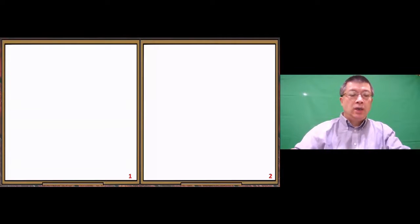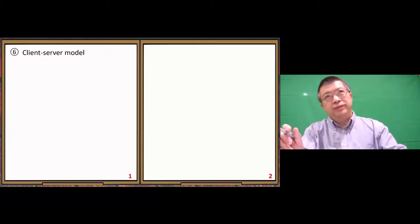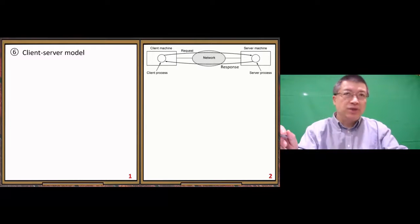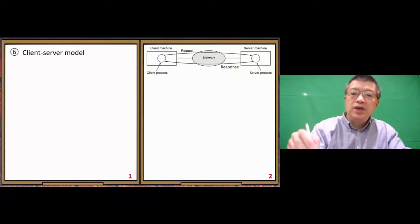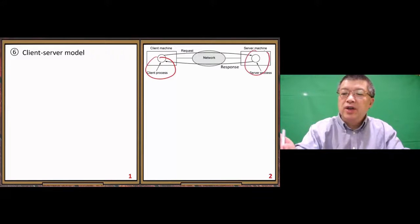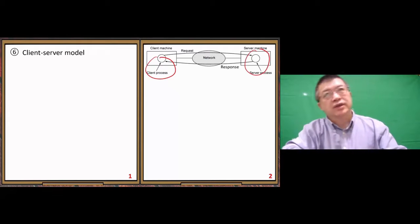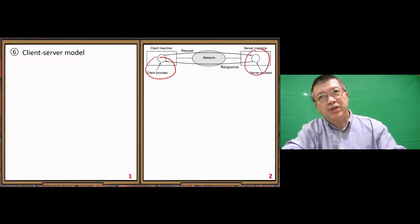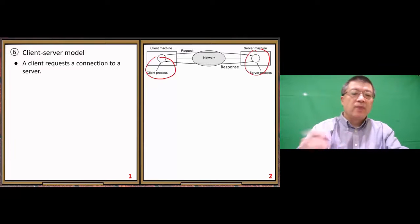Client-server model communication model. Let's look at this picture. Here you can see we have a client here, we have server here, in the middle network communication. A client requests a connection to a server.